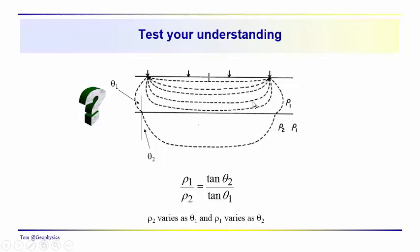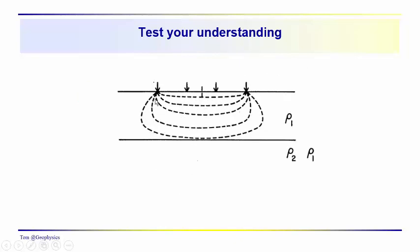Current wants to stay up here in this first layer. If you think back to current following the path of least resistance, we can guess that ρ1 is going to be less than ρ2. θ1 is greater than θ2, so we know ρ2 is going to be greater than ρ1 just looking at the angles. But we can also look at these current flow lines and see that current wants to stay up in this layer. In this example here, we don't have any current getting down into the second layer, so we know that ρ2 must be significantly greater than ρ1. Current is just not making it down into that layer.